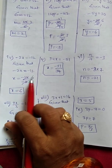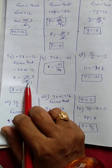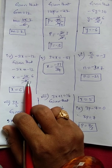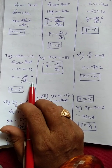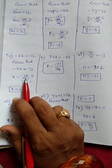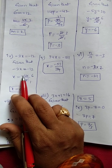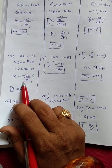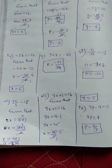Here minus 2x equals minus 12. So x equals minus 12 by 2. 2 ones are 2, 2 sixes are 12. Minus and minus will get cancelled because numerator and denominator both have the sign, so we can do the cancellation. Therefore x equals 6.